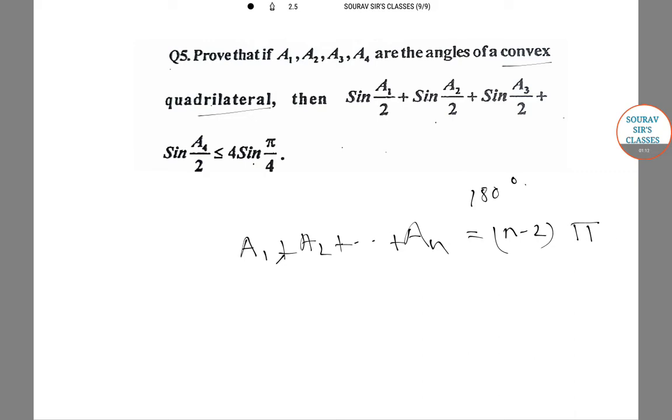So in our example, we will have a1 plus a2 plus a3 plus a4 equals 2 pi, or a1 by 2 plus a2 by 2 plus a3 by 2 plus a4 by 2 equals pi.